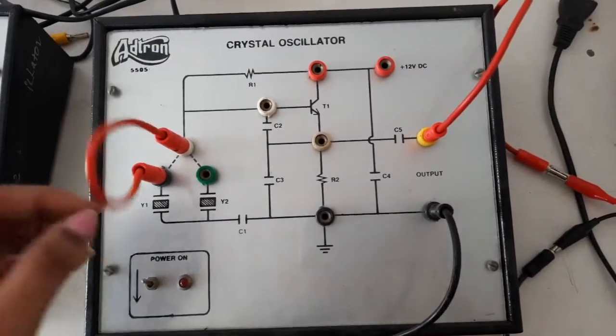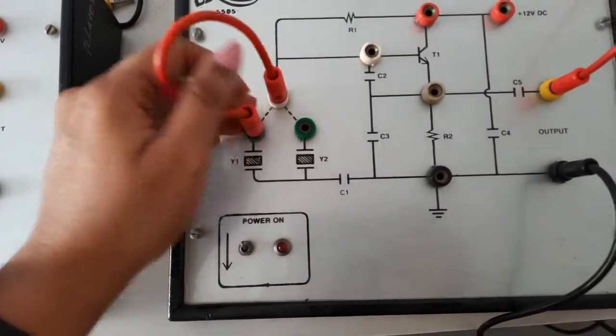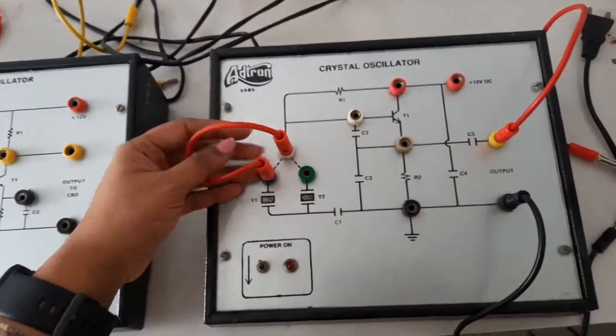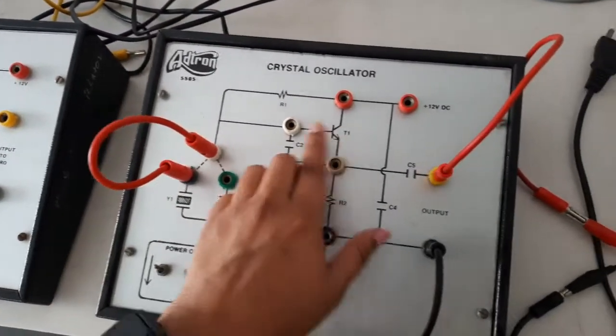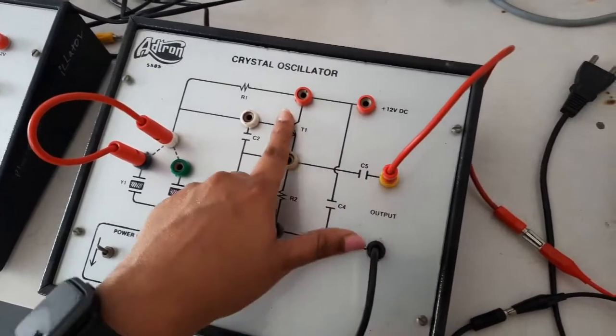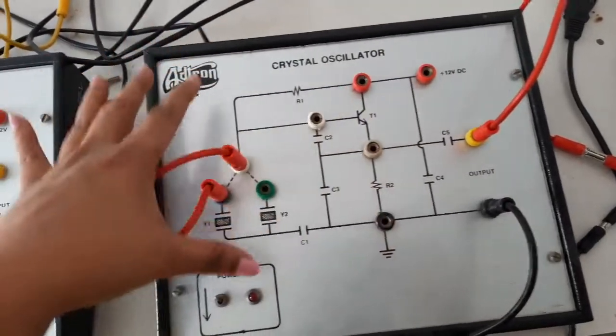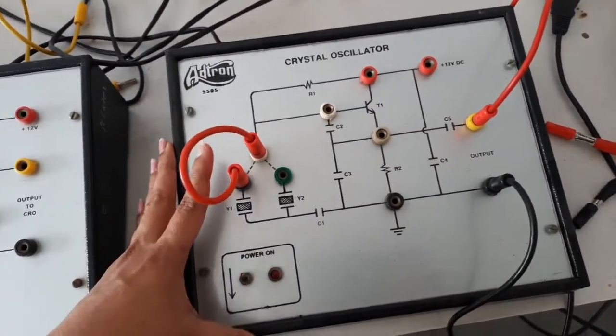This is the kit of the crystal oscillator. Here we have crystals Y1 and Y2 connected with jumpers. Here are the capacitors, including the output capacitor, transistor T1, resistors R2 and R1. All this is connected internally according to the circuit diagram.